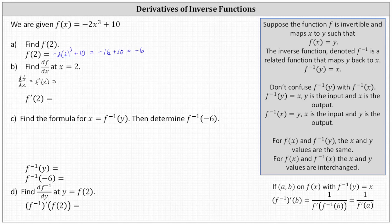f prime of x is equal to the derivative of negative two x cubed plus 10 with respect to x. The derivative of negative two x cubed is equal to negative six x squared — we multiply by three and then subtract one from the exponent — plus the derivative of 10, which is zero. Therefore, df dx is equal to negative six x squared.